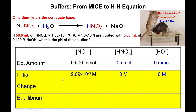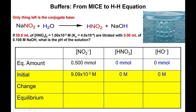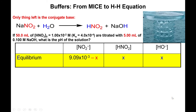Now that we have the concentration, we switch over to a traditional ICE table. NO₂⁻ is the reactant; the products are HNO₂ and hydroxide. The change is minus x for nitrite, plus x for HNO₂, and plus x for hydroxide, giving equilibrium concentrations of 9.09 × 10⁻³ − x for the reactant and +x for each product.